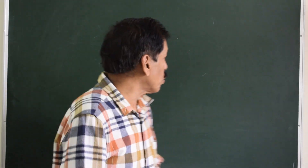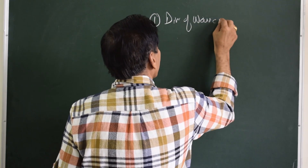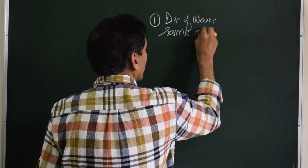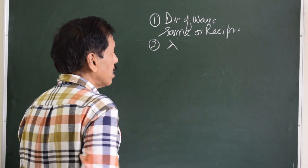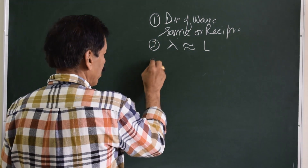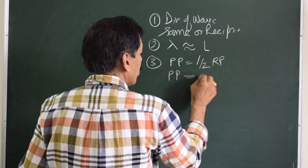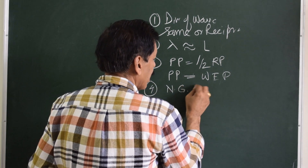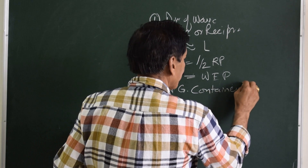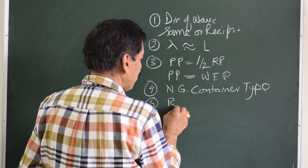Let us list all the conditions which are favorable for parametric rolling. Number one: direction of wave approximately same or reciprocal to the ship's direction of movement. Number two: wavelength approximately equal to the length of the ship. Number three: pitching period half of the rolling period. Number four: the vessel is a new generation container vessel. It also happens with bluff stern vessels.